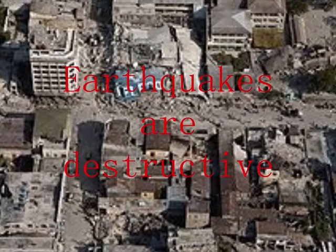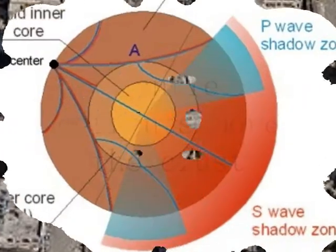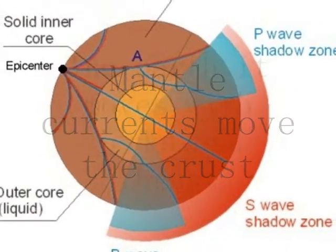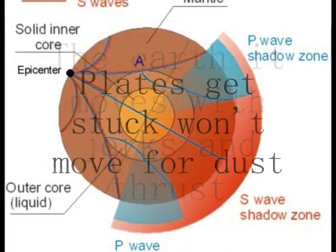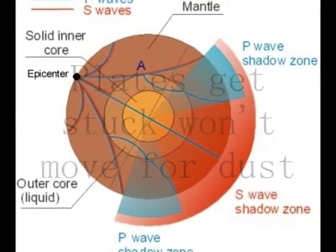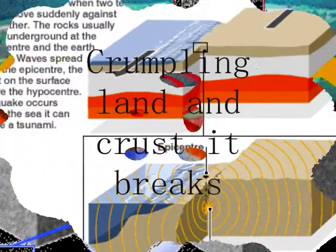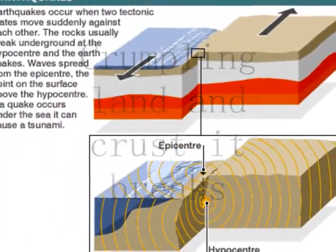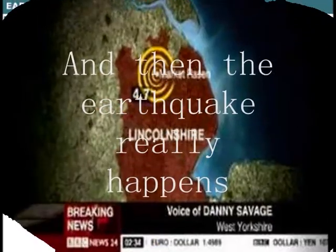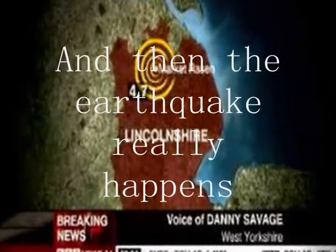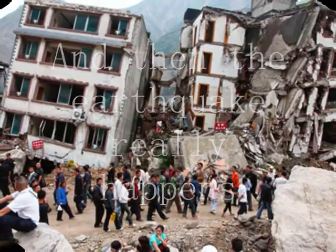Earthquakes are destructive. Crustal currents move across the Earth. Plates get stuck while moving past. Pressure builds between the plates, then overcomes and the land shakes. That's when the earthquake really happens.